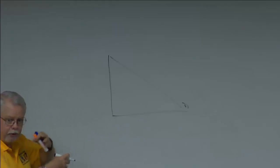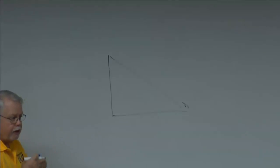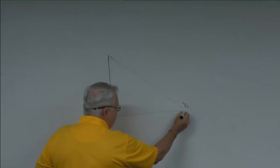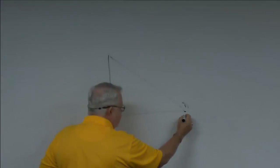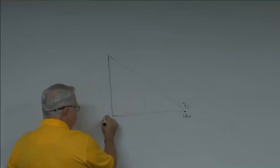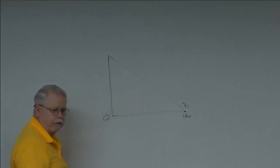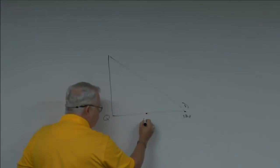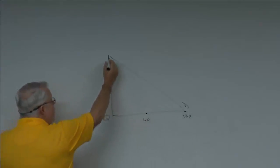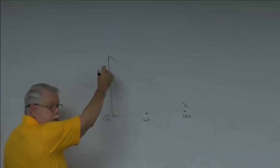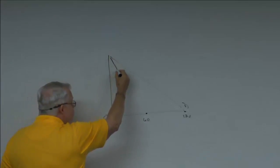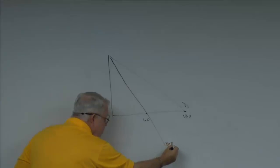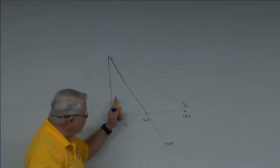For a downward-sloping demand curve: if the demand curve crosses the quantity axis at 120 units, go back halfway to 60 units and draw from the same price intercept — that's what the marginal revenue curve looks like. It has a negative slope and only goes halfway out.